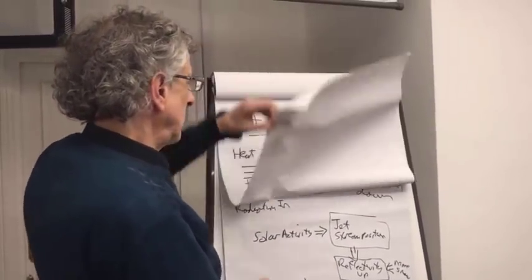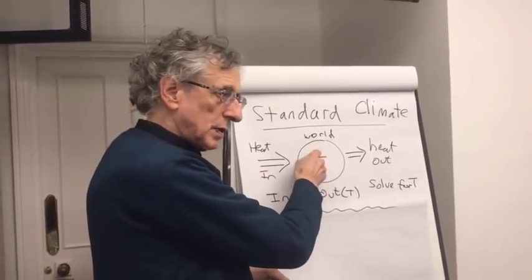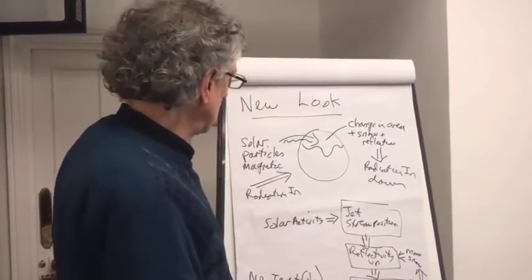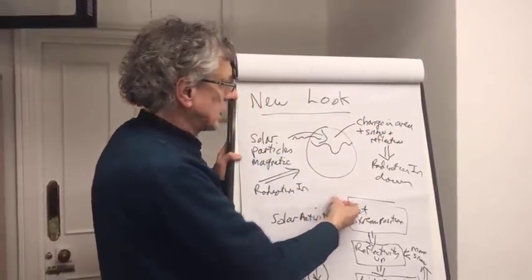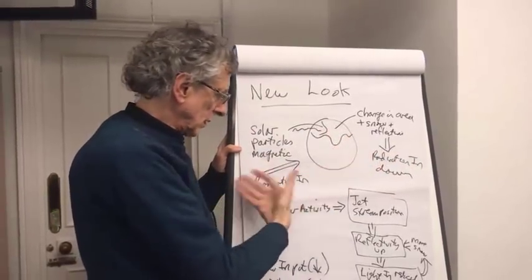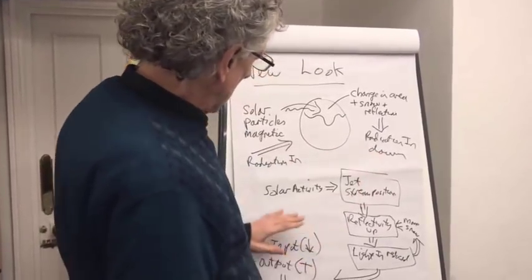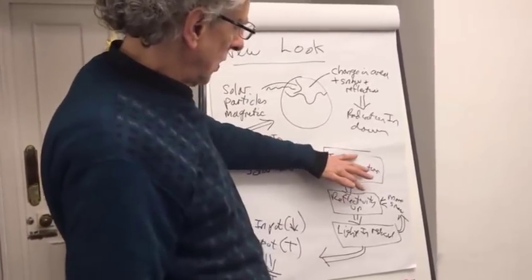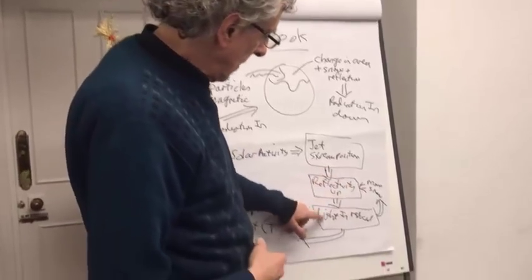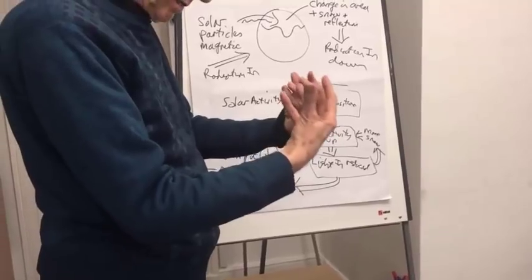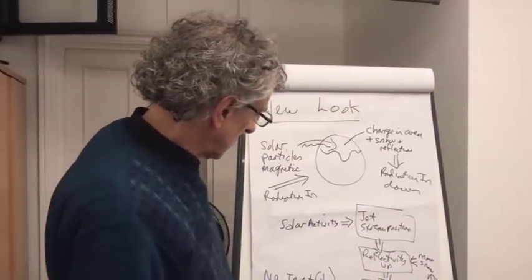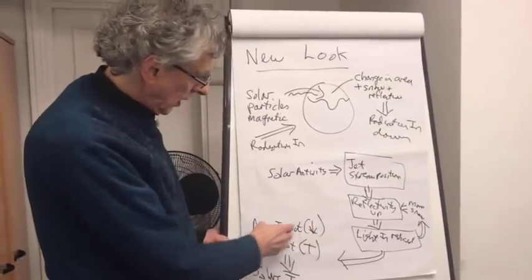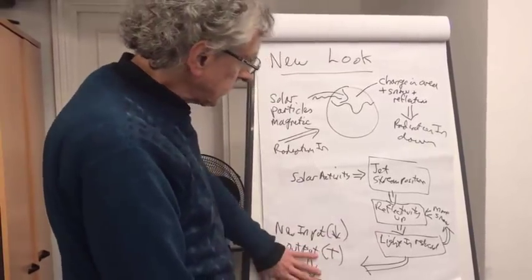What we say is something different. In the standard model, where the jet stream is depends on its temperature. Whereas we say the temperature depends on where the jet stream is. What actually is happening is solar particles come in, move the jet stream, and if the area goes up, there's more snow and reflectivity. That will then reduce the radiation in, so it gets colder. Solar activity going down means the jet stream will go south, reflectivity will go up because there will be more snow, and the light coming into Earth — the main energy — will go down, making even more snow. So there's a feedback mechanism, a magnification of this process. And then you do actually solve for T: new input lower equals some output, averaged over time, and you'll get an average temperature out. That's our fundamental difference, and the basis of it is a paradigm shift on ideas.